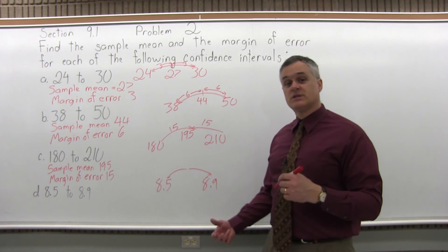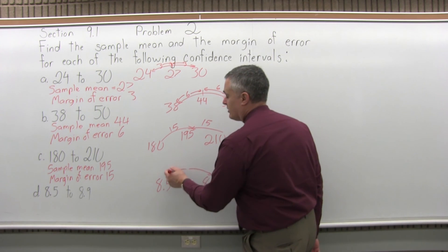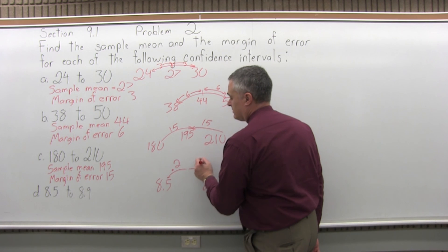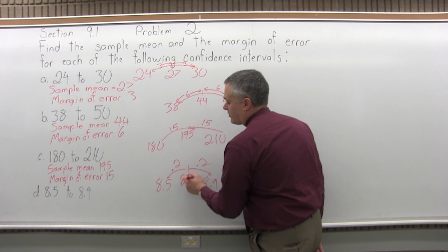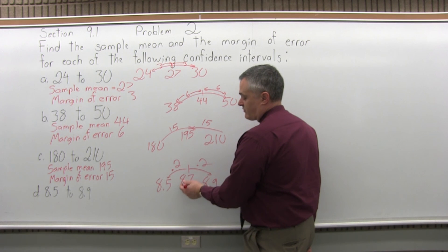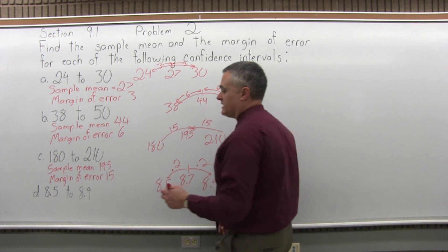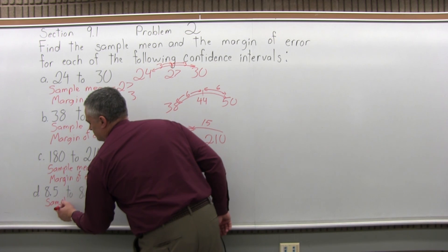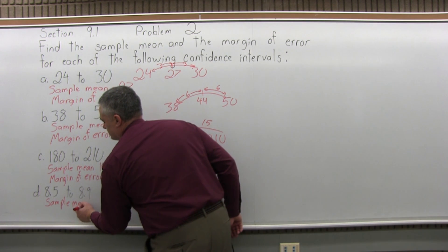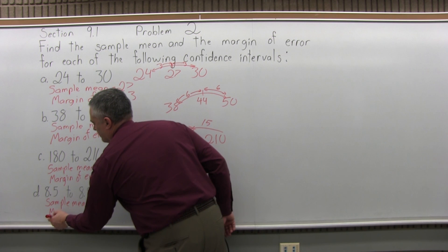So halfway would be 0.2. So 8.5 plus 0.2 would put your midpoint at 8.7 and you can just confirm 8.7 plus another 0.2 is 8.9. So the midpoint or sample mean would have been 8.7. And the margin of error would be 0.2.